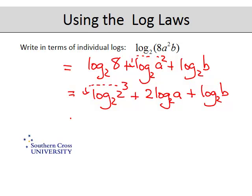That's okay as it is. So this second one, the 3 comes down in front. Then you've got log 2 base 2, which is just 1. So that simplifies to 3, plus 2 log a base 2, plus log b base 2. And that's it.